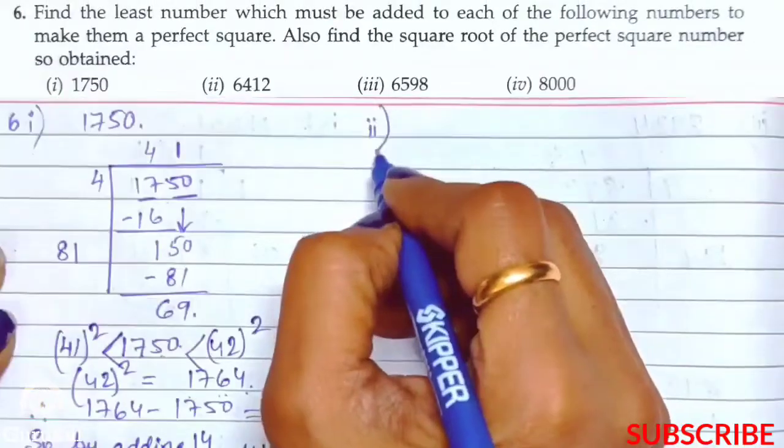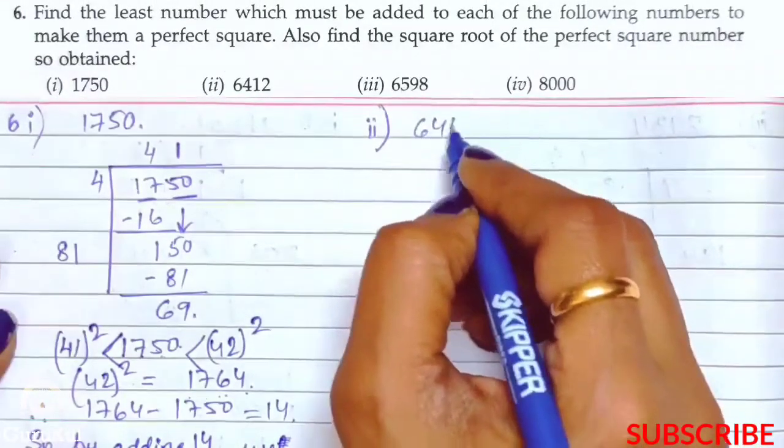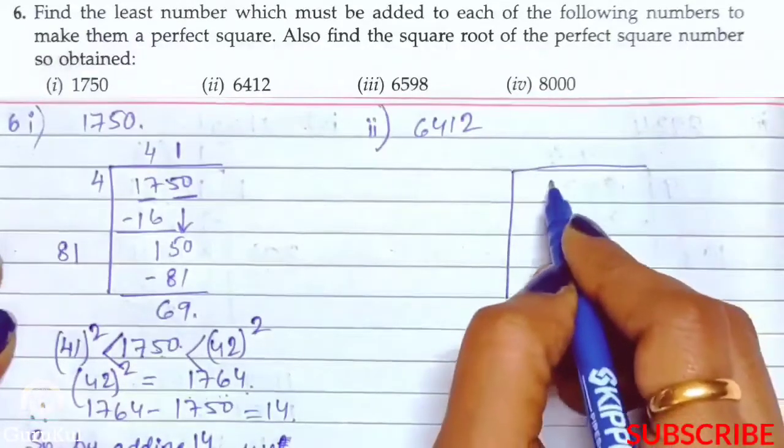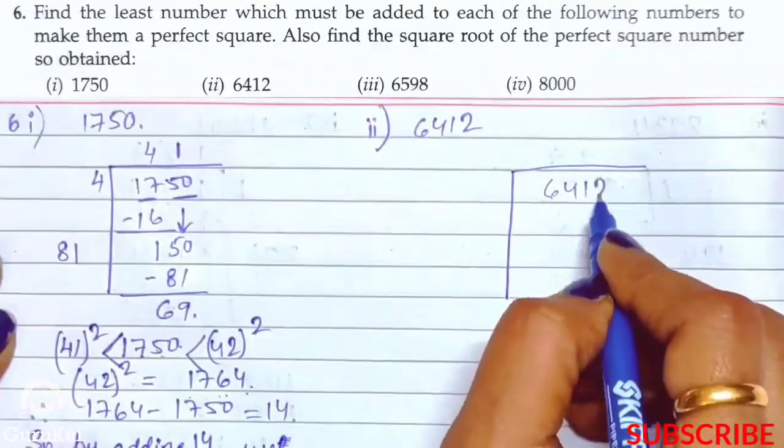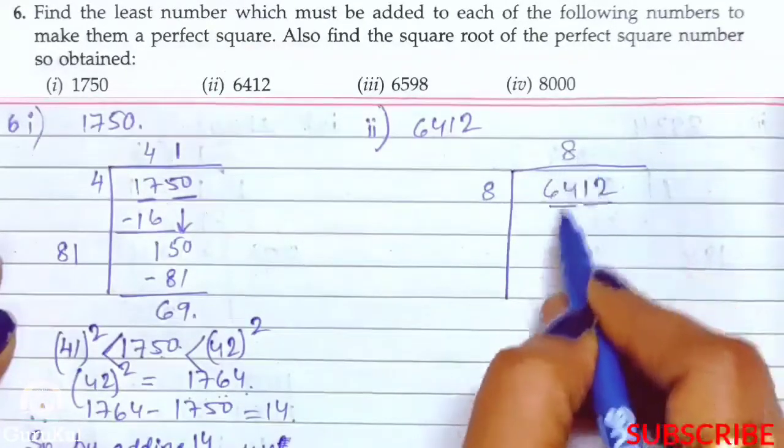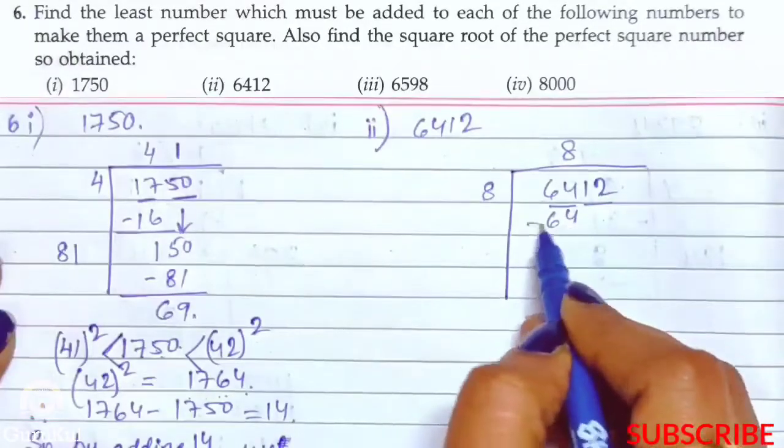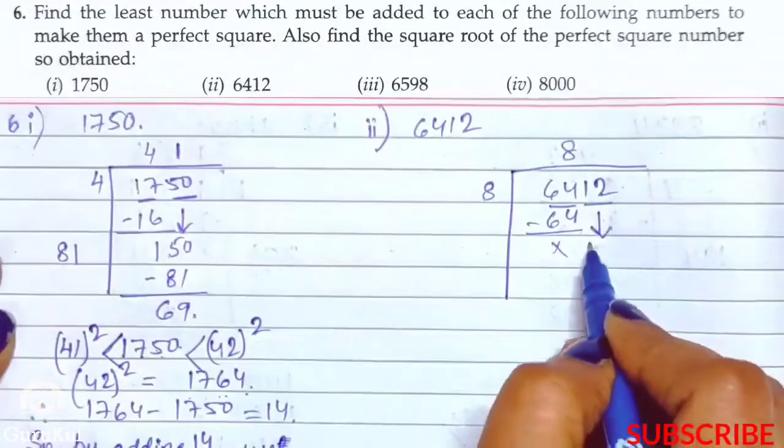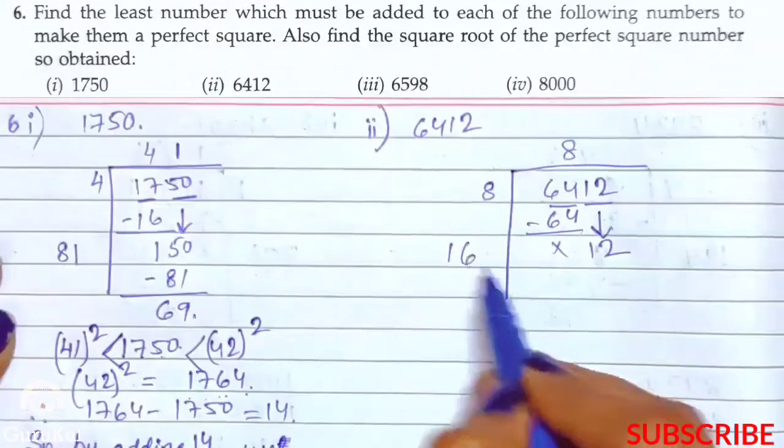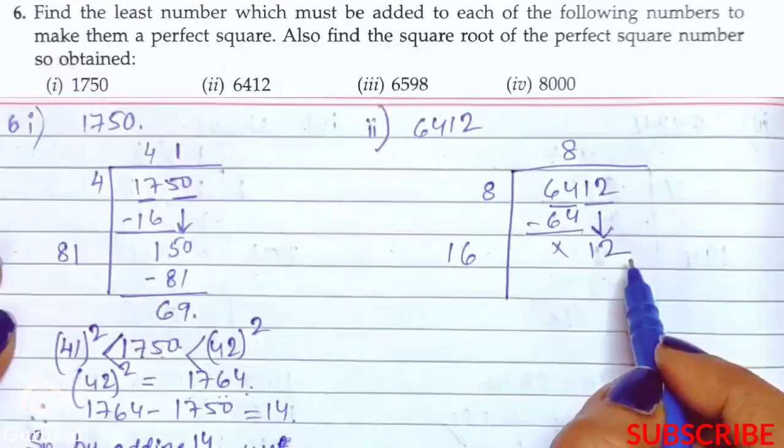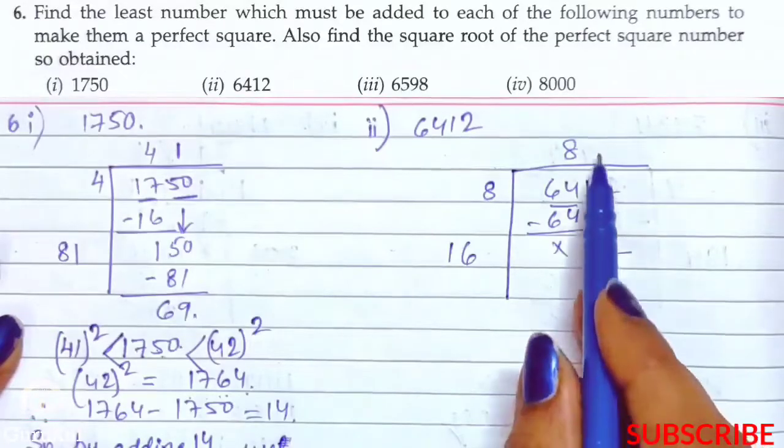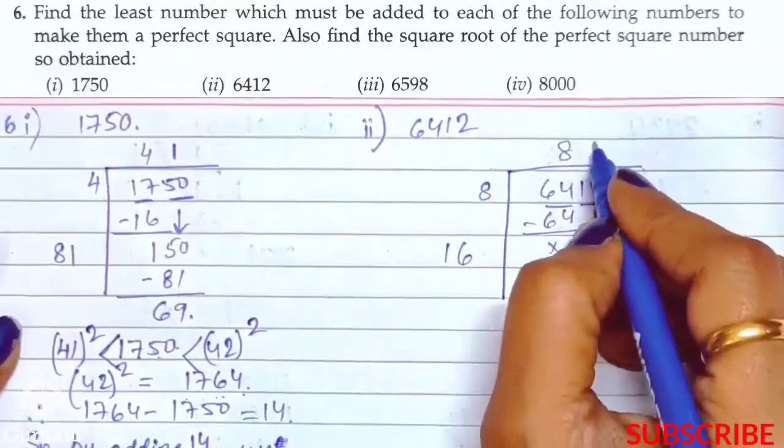Now the second part of question number 6, 6412. Let us start. 6412, pairing ho gaya. So 8 eights are 64, no remainder. We will bring down 12. Ab yaha 8 ka double 16. Yeh aagay divisible possible nahi hai. To jab yeh divisible nahi hua, to iske jaga pey ham loog kya likhenge? 0.